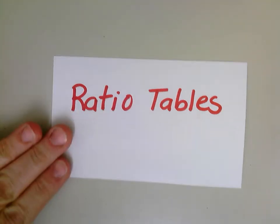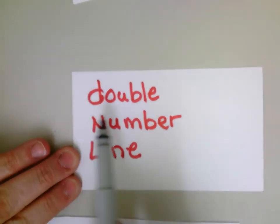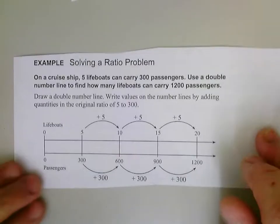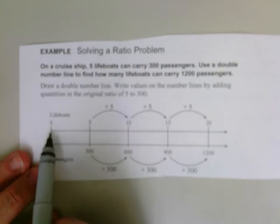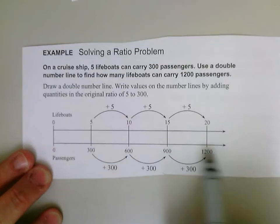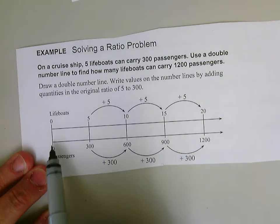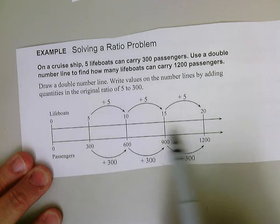So the first thing that we're going to talk about is called a double number line. It's called a double number line because you're going to be writing or drawing two number lines, one right above another. So here I have a number line that starts with zero and keeps going, and another one right underneath of it that starts at zero and keeps going.